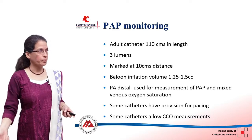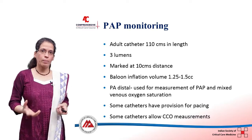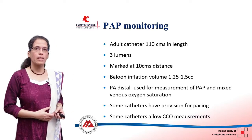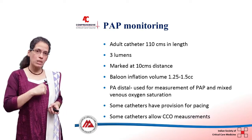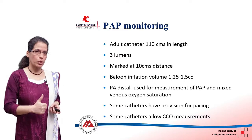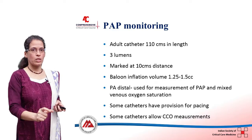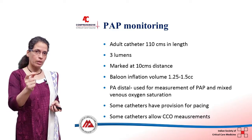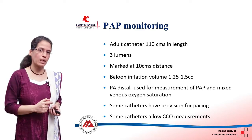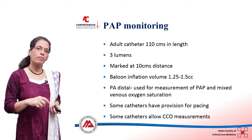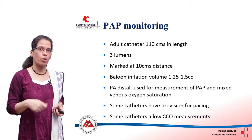The adult Swan-Ganz catheter is around 110 centimeters in length; the pediatric is around 60 centimeters. It has three lumens: the blue lumen opens in the right atrium for CVP monitoring at 31 centimeters; the PA proximal lumen opens at 30 centimeters; and the third lumen opens at the tip, used for collecting mixed venous oxygen samples or transducing pressures.